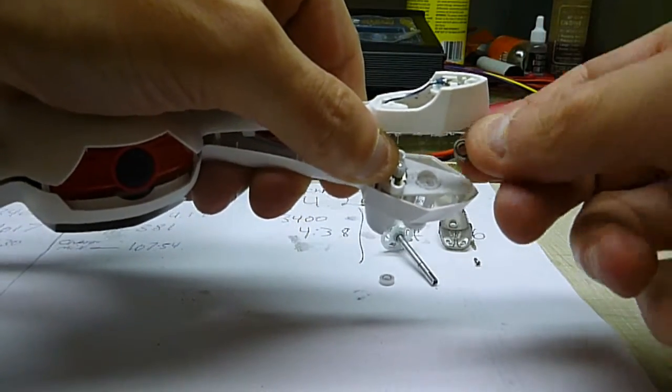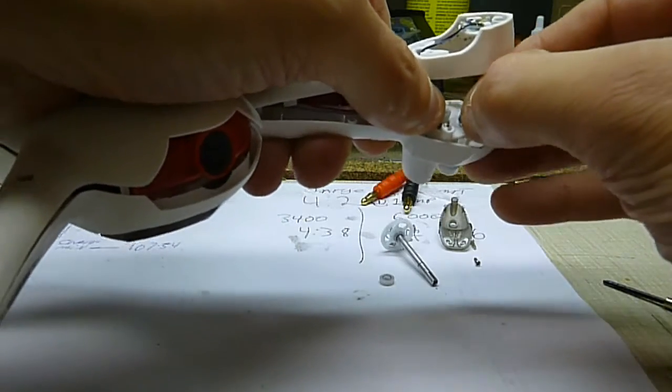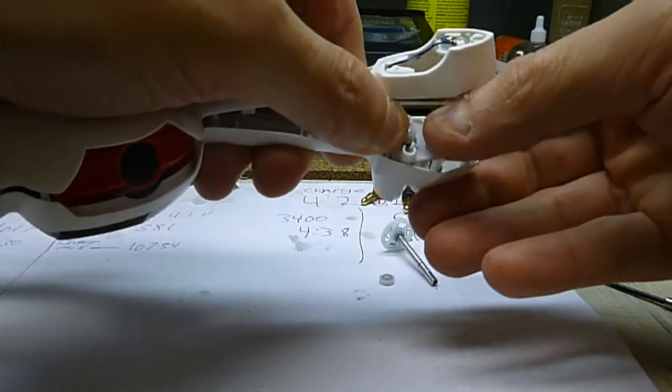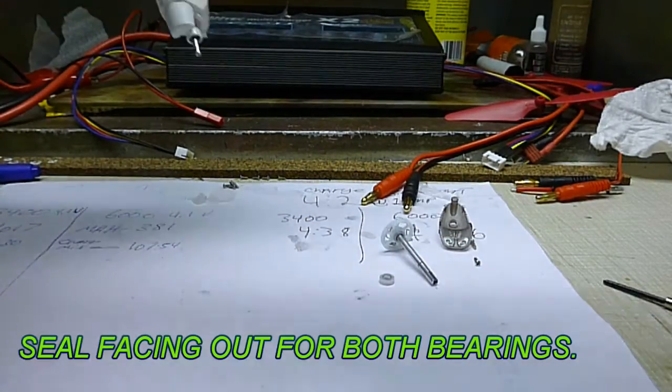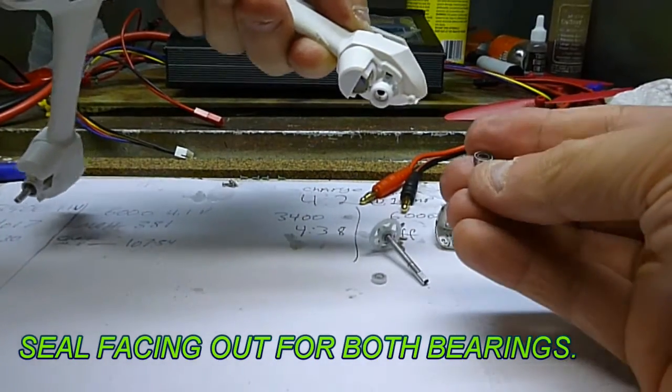Now you push the Traxxas ones in with the seal on the bottom. Push it in the top with the seal on the top.